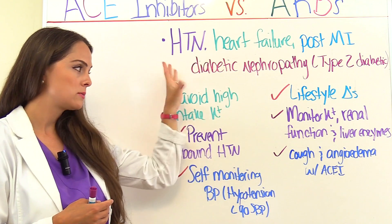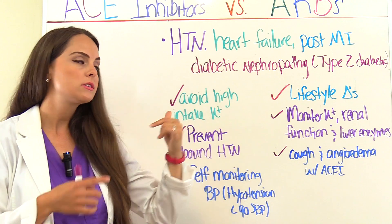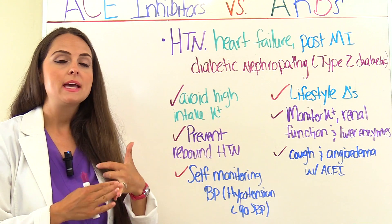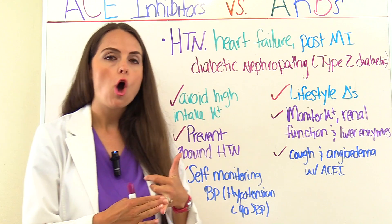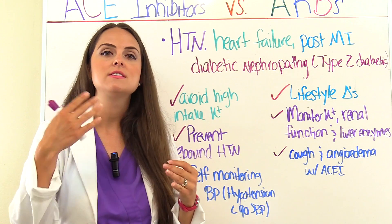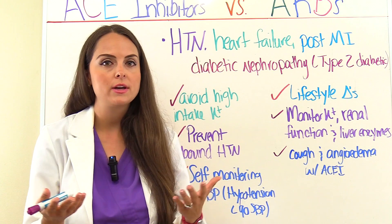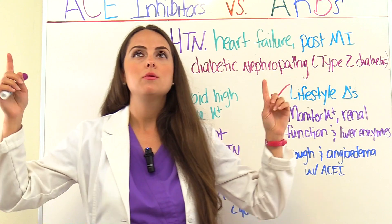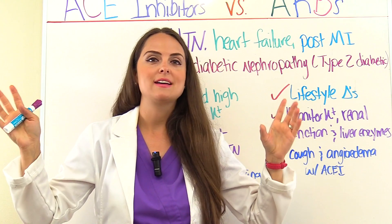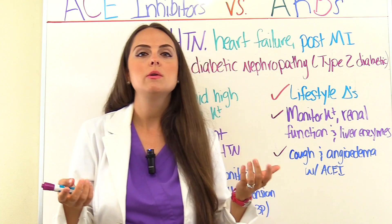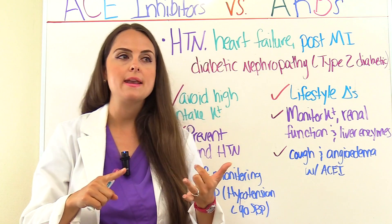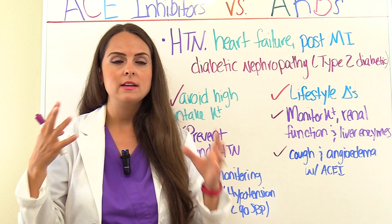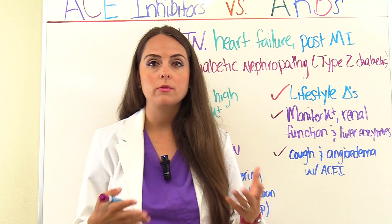Monitor the potassium level because of hyperkalemia risk, and also look at liver enzymes to make sure the liver is not being affected, and renal function. In some patients dependent on RAS — such as those with severe heart failure whose cardiac output isn't great and who depend on RAS to maintain it — giving an ACE inhibitor or ARB can cause kidney issues. Monitor the BUN and creatinine, check urinary output to ensure it's at least 30 cc's per hour, and watch for abnormal swelling indicating fluid retention.